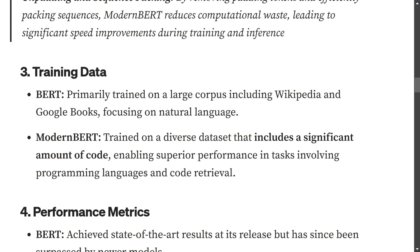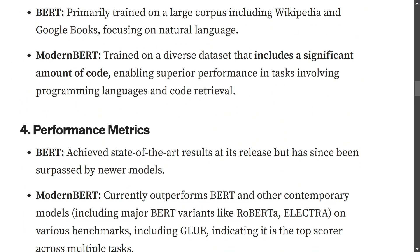Regarding training data, BERT was trained on a large corpus including Wikipedia and Google Books, focused on natural language. ModernBERT also includes a significant amount of code data, and as shown in the metrics from the previous video or blog post, ModernBERT has outperformed other BERT models on coding benchmarks by a large margin.